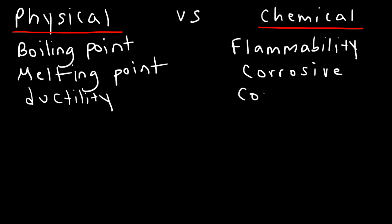Something that is combustible is also a chemical property of a substance. For example, gasoline is combustible — that's a chemical property of gasoline. If you put gasoline in air and you add a spark to get things started, it's going to combust. It's going to react with oxygen, creating a large fire. So, combustibility — or if something is combustible — that is describing the chemical property of that substance.